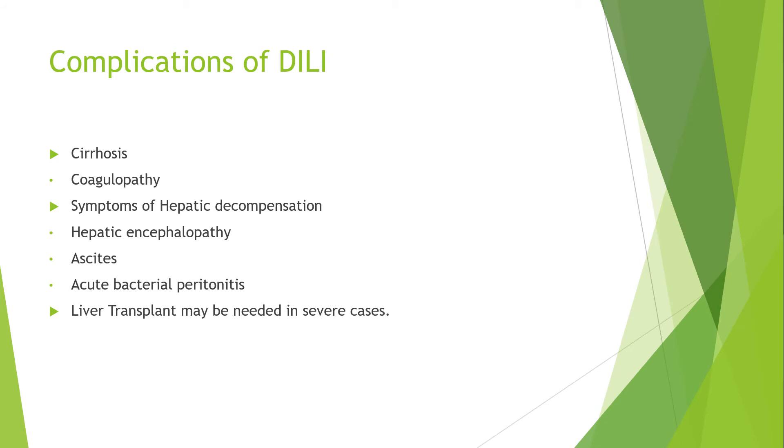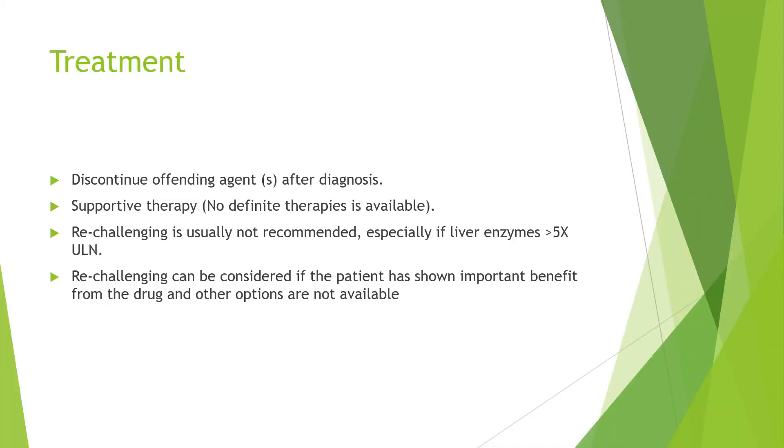Treatment options for acute bacterial peritonitis include the use of third-generation cephalosporins such as intravenous ceftriaxone two grams every 24 hours, or IV cefotaxime two grams every eight hours, for a treatment duration of five to ten days depending on severity. Liver transplant may also be needed in very severe cases. For the treatment of DILI itself, there isn't any definitive treatment option available for all patients. For patients who took more than the maximum daily limit of acetaminophen, N-acetylcysteine can be administered to treat the toxicity and slow the effect of liver injury.